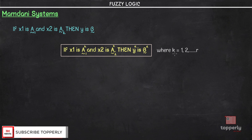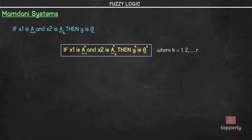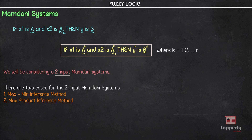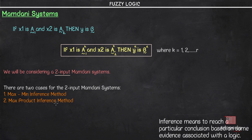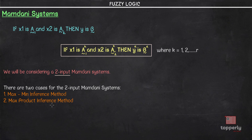Coming back to the Mamdani system, we will be considering a two-input Mamdani system where x1 and x2 are inputs and y is the output. Mamdani systems comprise two different cases: the max-min inference method and the max-product inference method. The word inference means to reach a particular conclusion based on some hypothesis, evidence, or statement associated with logic or knowledge. Let's look at each of these cases, starting with the max-min inference method.